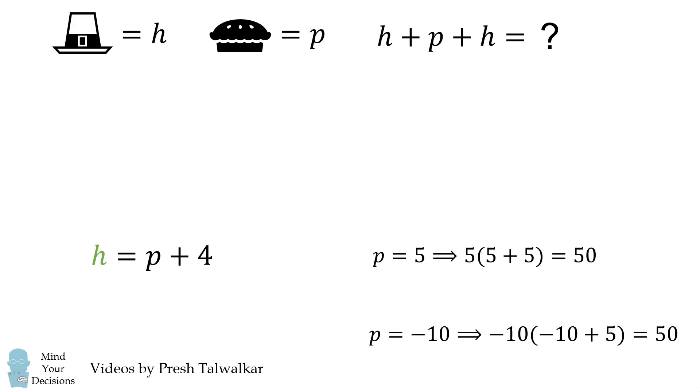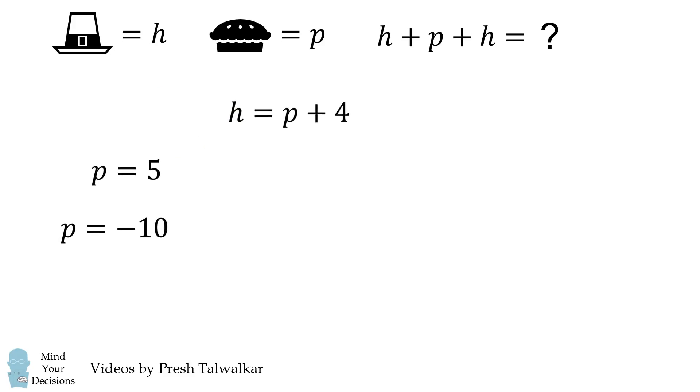So we have two possible values of P. We either have P is equal to 5 or P is equal to negative 10. H is then equal to P plus 4. So we have H is either equal to 9, or if P is equal to negative 10, H will be equal to negative 6.